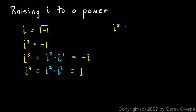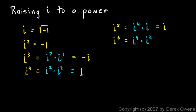i to the fifth can be thought of as i to the fourth times i. And we know i to the fourth is 1. So 1 times i — i to the fifth is just equal to i. You're going to see a pattern here. i to the sixth can be thought of as i to the fourth times i squared. i to the fourth is 1, and i squared is negative 1. So we just have 1 times negative 1, and that's clearly negative 1.